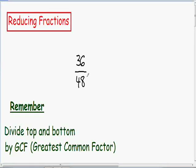So now I want to go over a little bit harder reducing fraction example. Here we have 36 over 48, and the first thing I want to do is find the greatest common factor between 36 and 48, or in other words, I want to find the biggest number that can be divided evenly with both the numerator and the denominator.